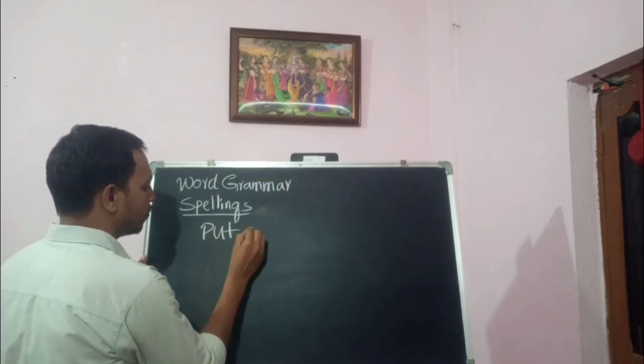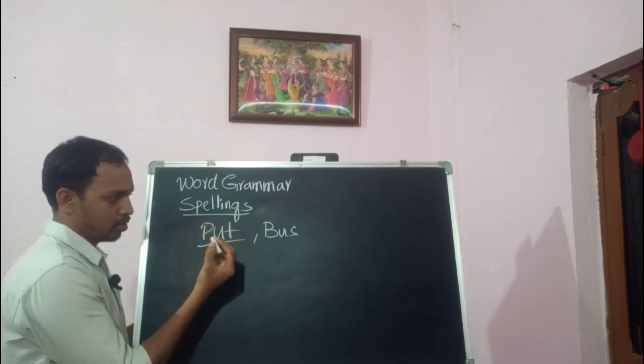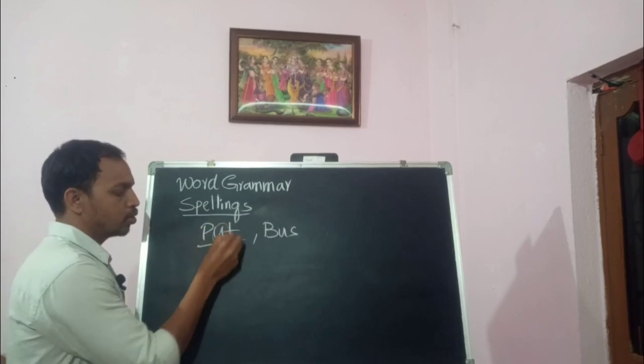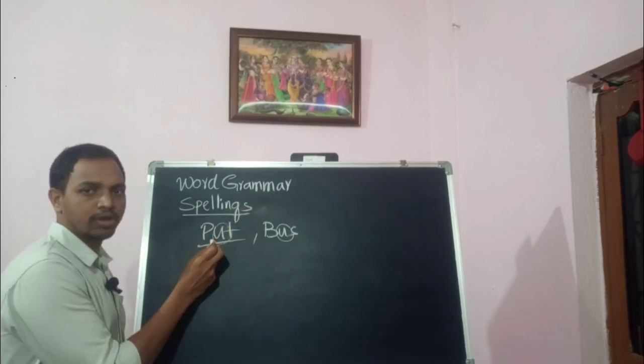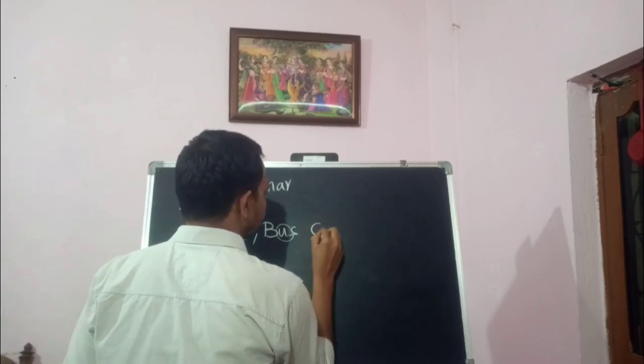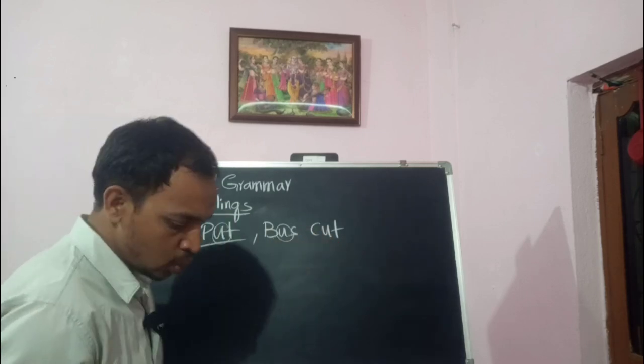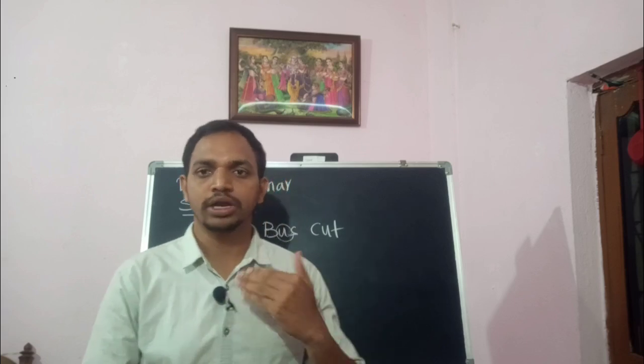Why do people make mistakes? It's based on pronunciation. For example, the word 'put' — P-U-T — and the word 'bus' — B-U-S — both have the letter U, but we pronounce them differently: 'put' and 'bus'. Similarly, 'cut' also has U. In English, most words have spellings and pronunciations that are mostly different, which is why people make spelling mistakes.